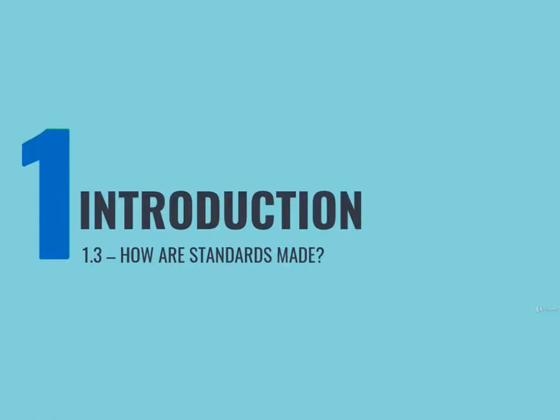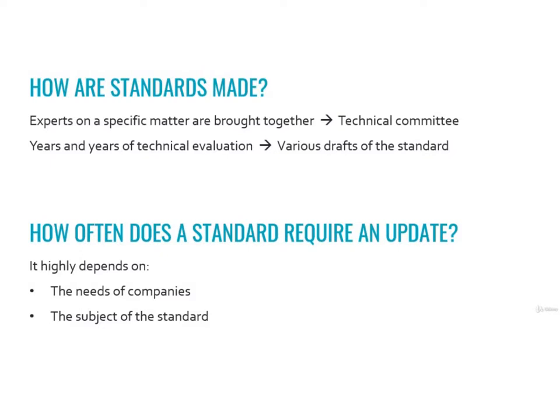Chapter 1.3: How are standards made? We just learned what is the use of standards. Now it's worth our time learning where standards come from. A standard is a collective work — representatives of organizations having an interest and expertise in the subject matter are brought together to form a technical committee. After years of technical evaluation, they draw up the standard. Throughout this process, ISO staff facilitates their development and review.